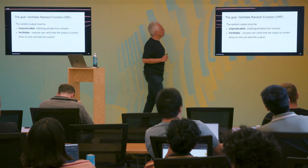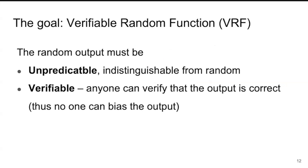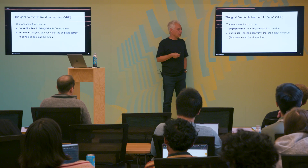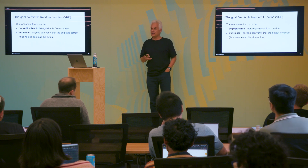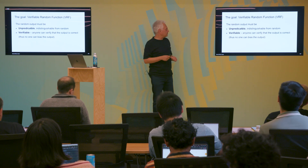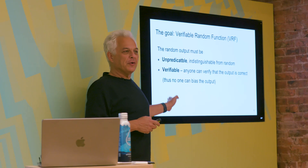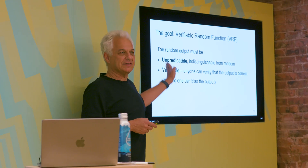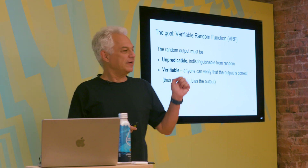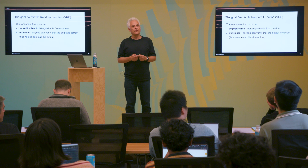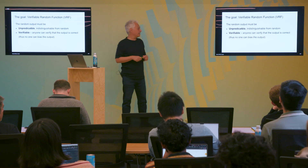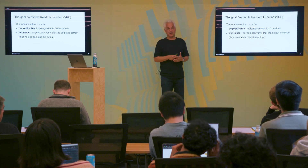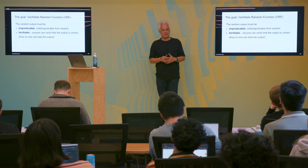What we want to achieve is a Verifiable Random Function, or VRF, where the output must be unpredictable - more accurately, indistinguishable from random - and verifiable, meaning anyone can verify the output is correct. The output was committed to at an earlier stage, so no one can bias it. The eventual solution does use a random oracle for the proof, so the proof is in the random oracle model.